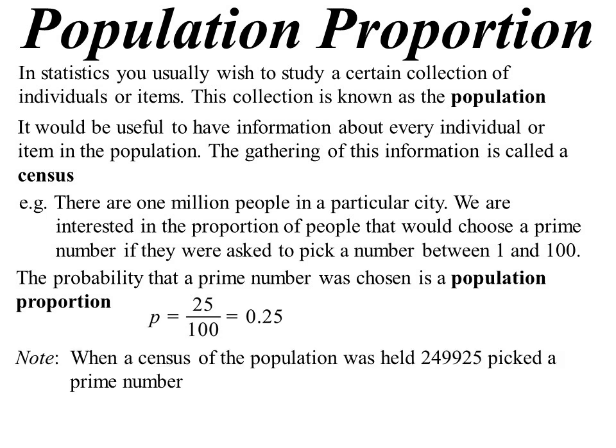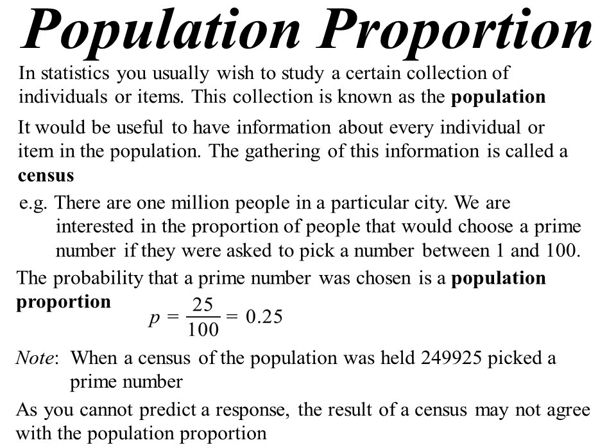Now when we did this census, actually I simulated this census using a spreadsheet and a random number picker but randomly picked a million numbers. Well 249,925 people picked a prime number. Now you can't predict the response of course because it's all random. So the result of a census is not necessarily going to agree with that population proportion or the probability of it actually happening. Being incredibly lucky if it did. So that gets us to this idea of a sample proportion.